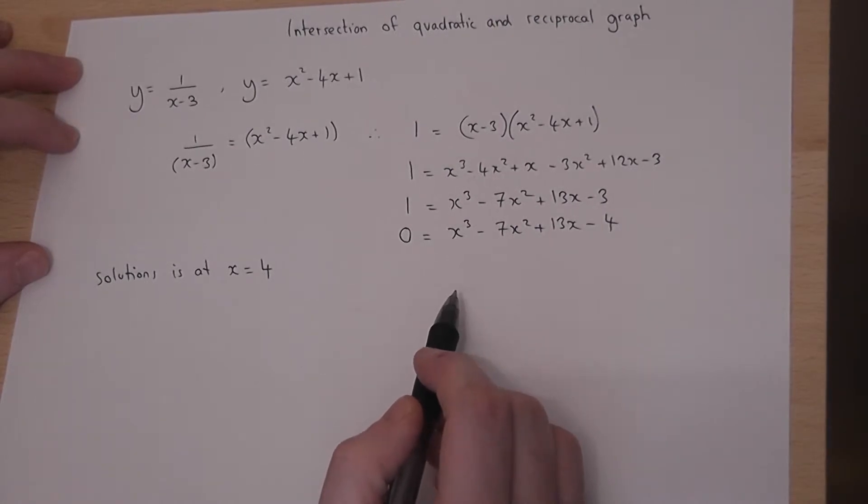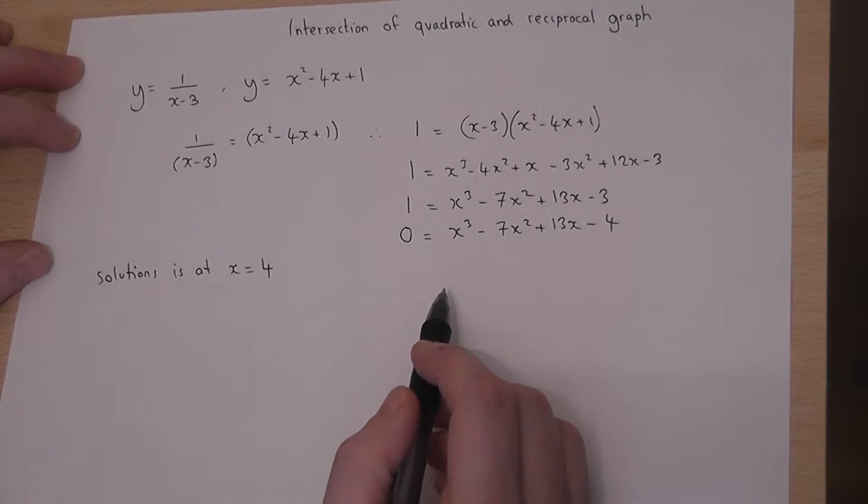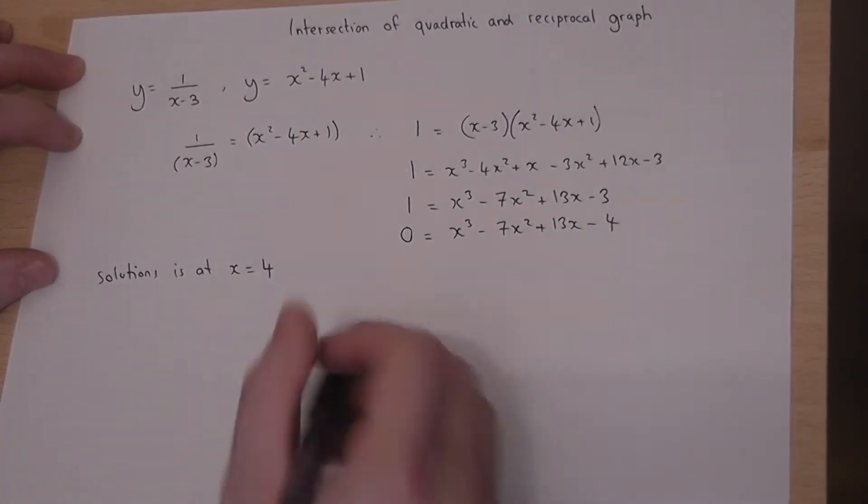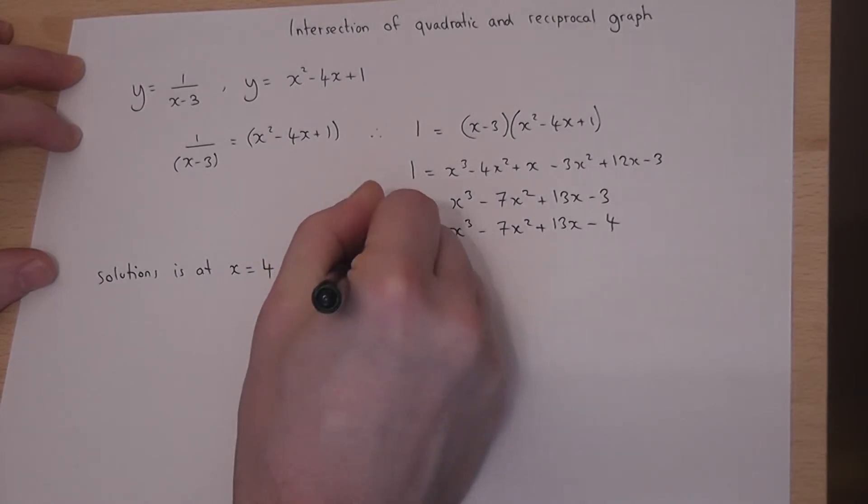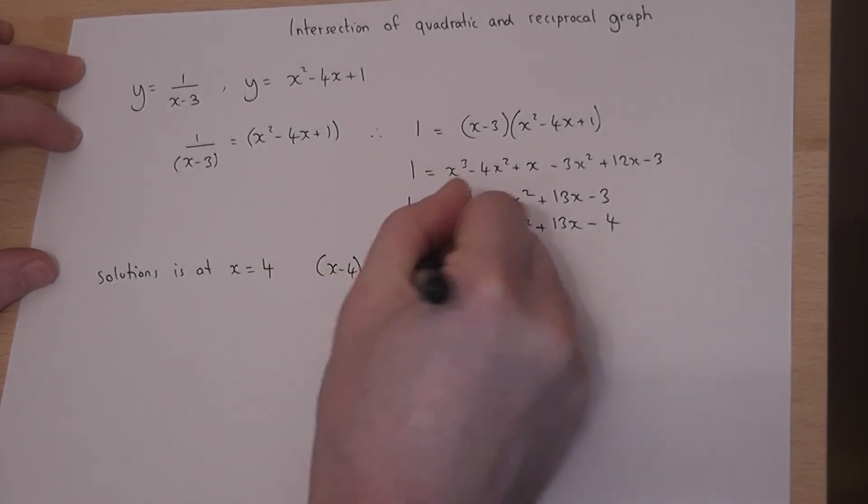And we want to find the other two solutions, if they exist. Now if we know that x equals 4 is a root, then therefore we know that (x-4) is a factor.